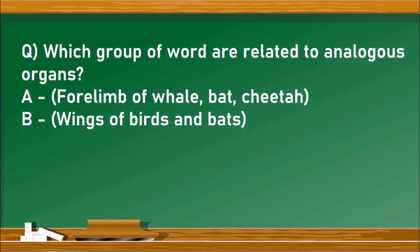Next question: Which group of words are related to analogous organs? Analogous and homologous organs are evidence for evolution. Analogous organs are structurally different but have the same function. Group A: forelimbs of whale, bat, and cheetah are structurally same but functionally different - these are homologous organs. Group B: wings of birds and bats are structurally different but functionally same - these are analogous organs. The right answer is B.